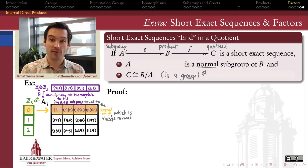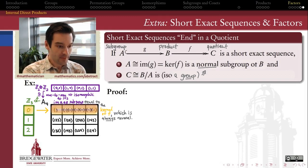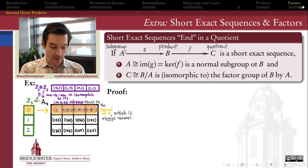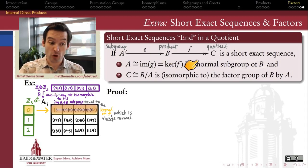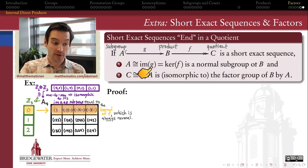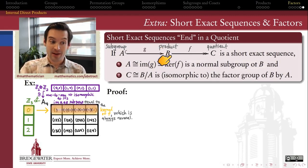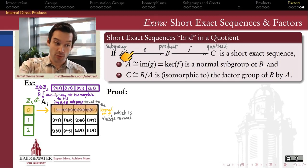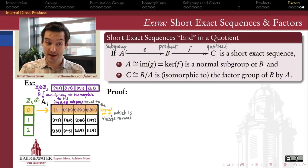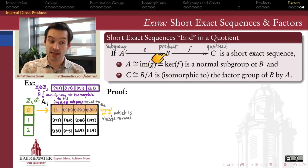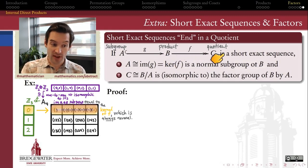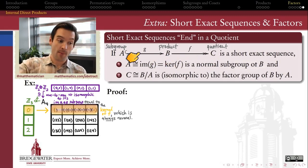So the key observation for this video: if you give me a homomorphism out of a group B, then I can supply you with a normal subgroup of B, defined as the kernel of that homomorphism. The kernel of any homomorphism out of B is always a normal subgroup of B. Because F is a homomorphism out of B, its kernel — which is a subgroup of B — actually ends up being a normal subgroup of B. And because that kernel equals the image of G (since it's an exact sequence), that normal subgroup of B is isomorphic to A. So in a short exact sequence A to B to C: A is isomorphic to a normal subgroup of B, and C is isomorphic to the factor group of B by that normal subgroup.